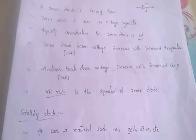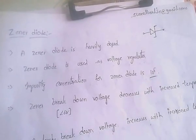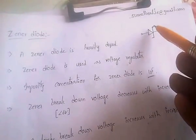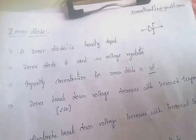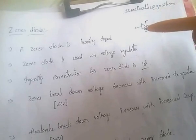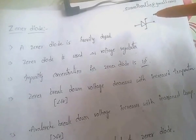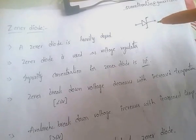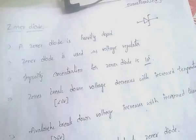The next diode is the Zener diode — very important. The Zener diode is used as a voltage regulator. It is nothing but a heavily doped P-N junction diode.